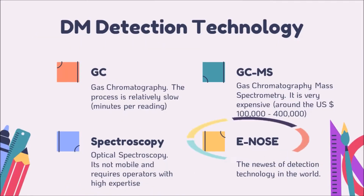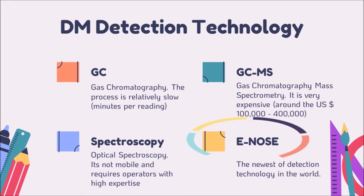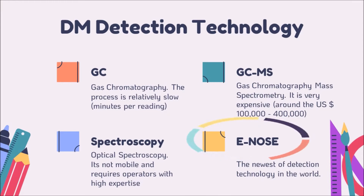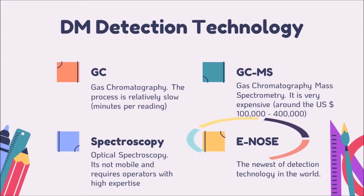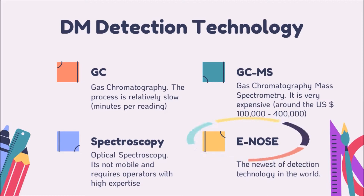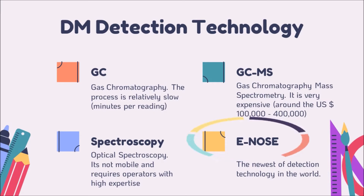Diabetes detection technology that is non-invasive can be done with aroma detection instruments. Conventional aroma detection instruments that have long been known include gas chromatography, mass spectrometry, optical spectroscopic, and GC-MS combination. The characteristics of these conventional instruments include a process that is relatively slow, not mobile, very expensive, and requires an operator with high expertise.